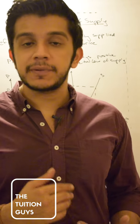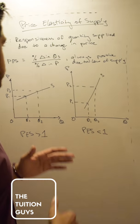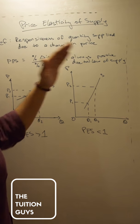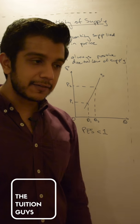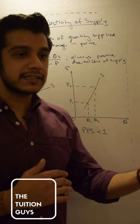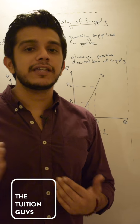Firstly, the responsiveness of quantity supplied due to a change in price is the elasticity of supply. But what does that mean? That means by what extent is the quantity supplied changing from the producer as price changes.